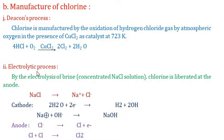The second industrial method is the electrolytic process — electrolysis of brine (concentrated NaCl solution). At the cathode, NaOH is formed, while at the anode, chlorine gas is evolved. This process is the same as the electrolysis of molten or aqueous NaCl studied in electrochemistry.